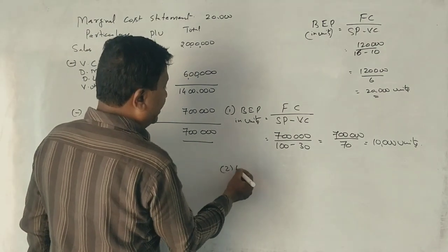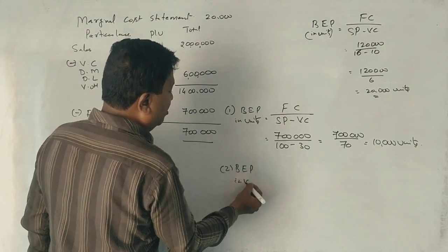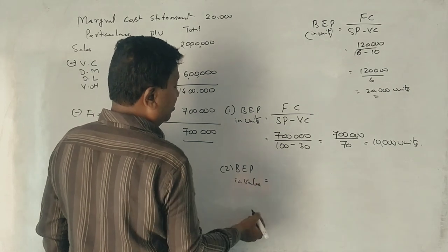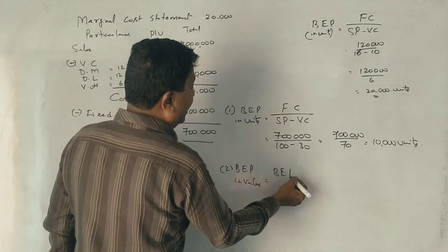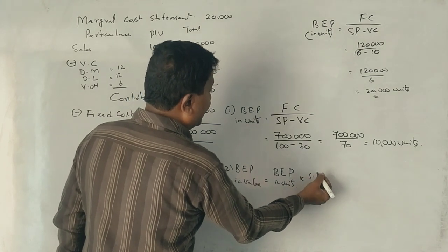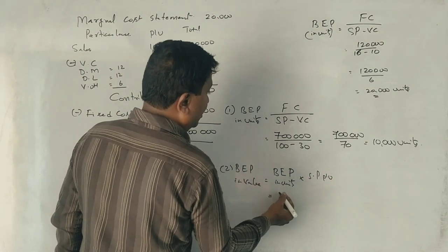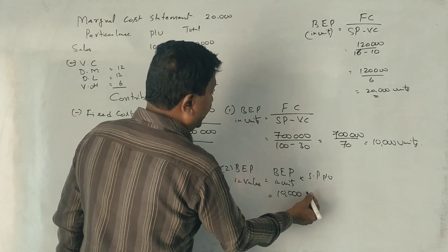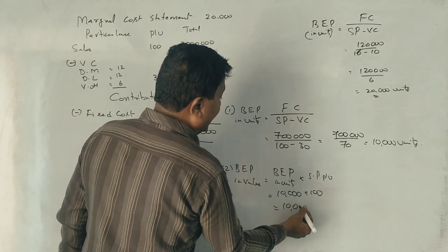This is the break-even point in value. This is the break-even point in units into selling price per unit. So, 10,000 into 100.